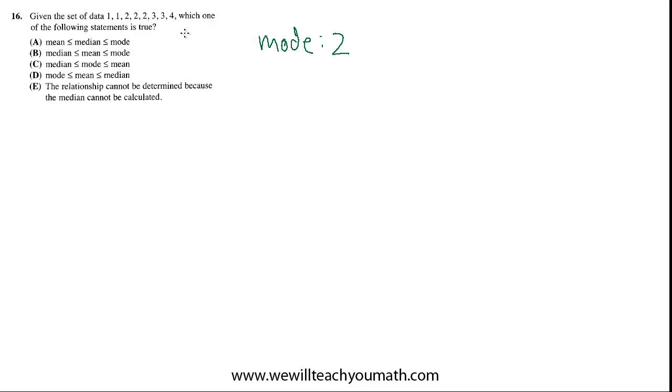Regarding the median, the data's already in order, so we just have to pick out the middle number, but we have an even number of numbers, right? We have 8 data points, so the median when you have an even number of data points is the average of the 2 middle points. But fortunately for us, the 2 middle points are the same. They're both 2. So the median is also 2. The median and mode are the same.